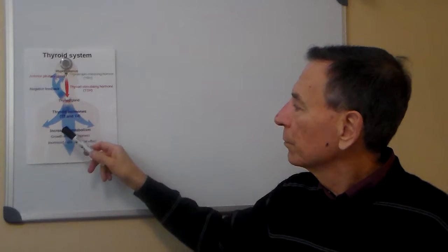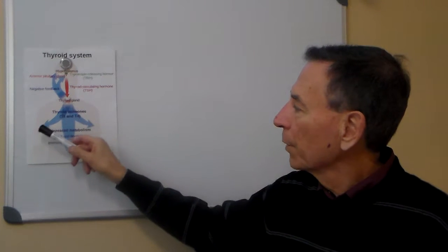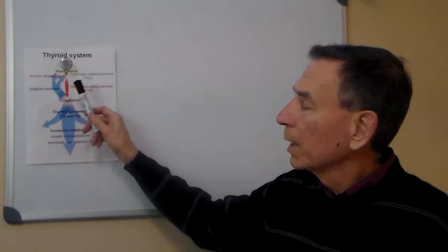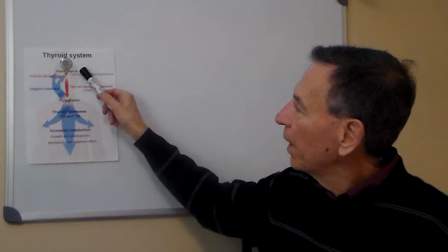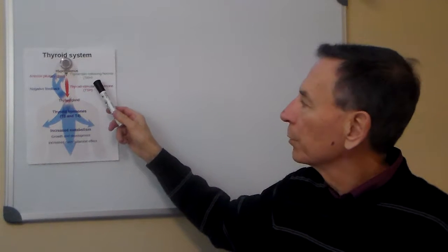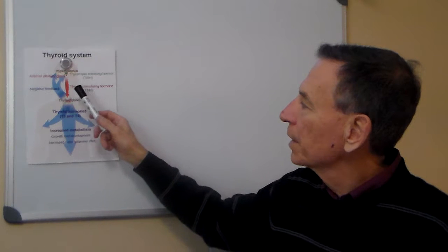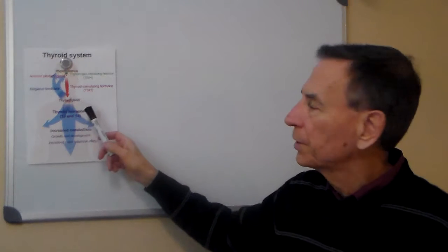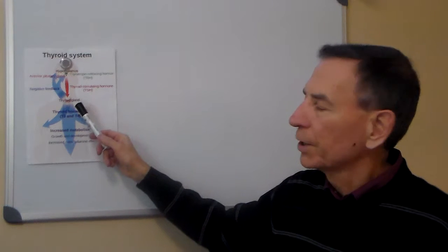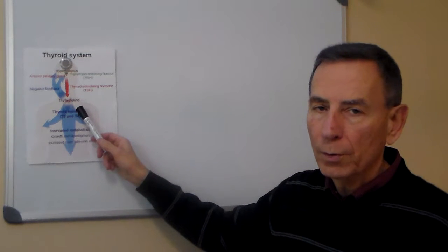So ideally what happens here is when thyroid hormones are utilized then the blood levels get low and the hypothalamus, the gland in the brain here, releases this Thyrotropin releasing hormone and it tells the pituitary to release the thyroid stimulating hormone. And this tells the thyroid to produce more hormones.